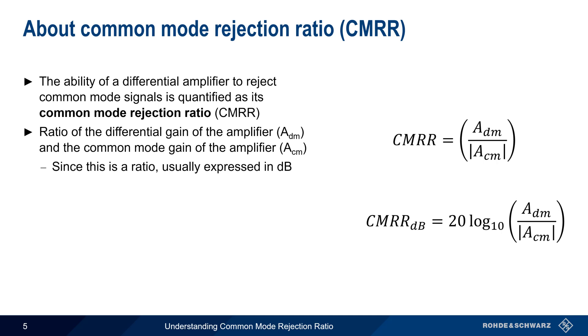And because this is a ratio, it's most often expressed in units of decibels or dB. Since a differential amplifier should have much greater differential mode gain than common mode gain, CMRR should always be positive, although you may sometimes see CMRR reported as a negative value in specifications, data sheets, etc.